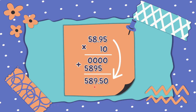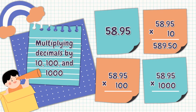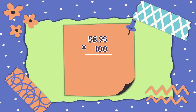Hmm... Can you see the similarities? We are done multiplying 58 and 95 hundredths by 10. The answer is 589 and 50 hundredths.